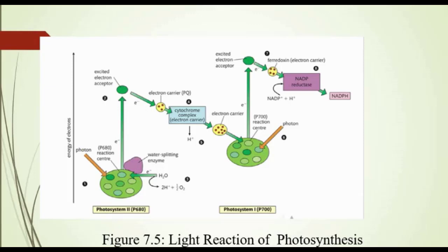The electrons of chlorophyll, after the production of ATP, and the hydrogen ions of water are used for the reduction of NADP to NADPH. This whole series of light reactions is called the Z scheme due to its Z shape. Look at figure 7.5. When light causes photolysis of water, two electrons are transferred to chlorophyll, pass through the electron transport chain, and provide energy for synthesis of ATP. These electrons are then transferred to another chlorophyll molecule, and along with hydrogen ions, are required for the reduction of NADP to NADPH.